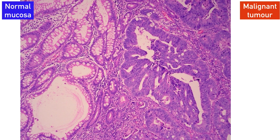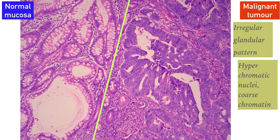Under higher power, we can clearly see the difference between normal and malignant mucosa. The tumor cells show an irregular glandular pattern, hyperchromatic nuclei, and a coarse chromatin pattern. There is also stromal invasion, where the tumor is no longer confined to the mucosa but infiltrates everywhere.